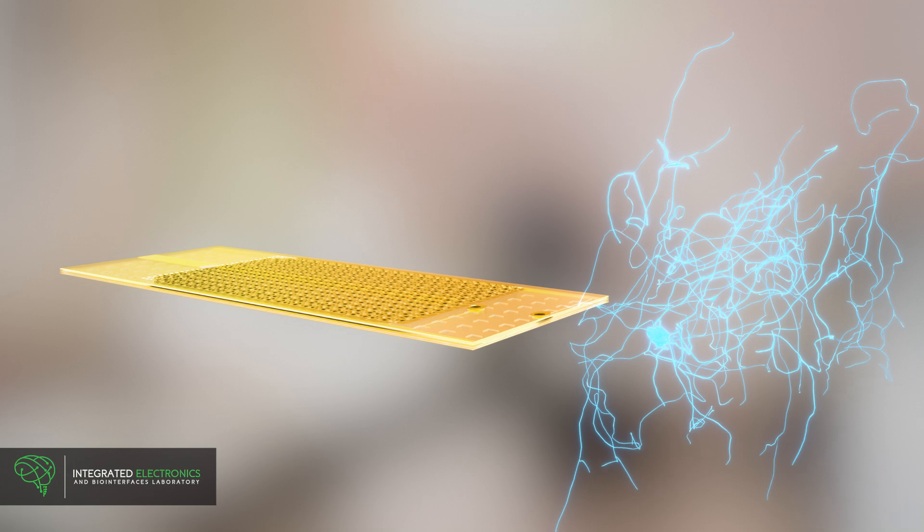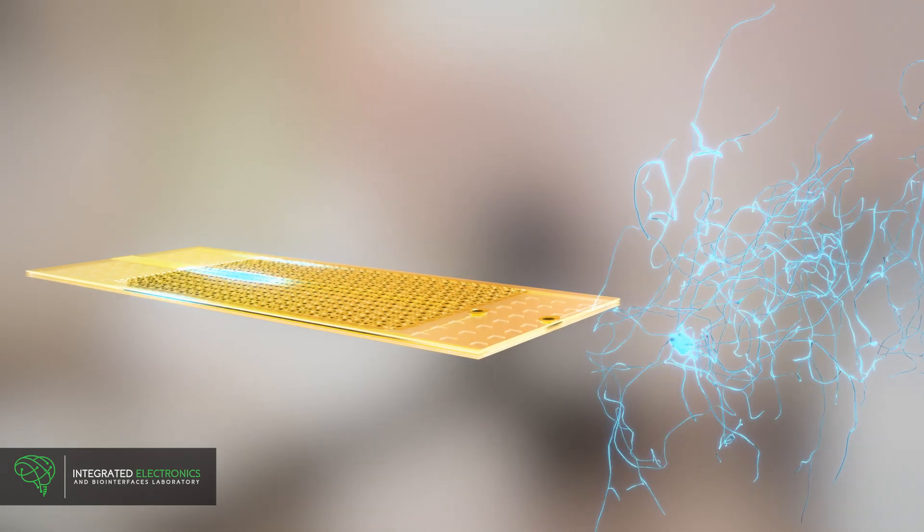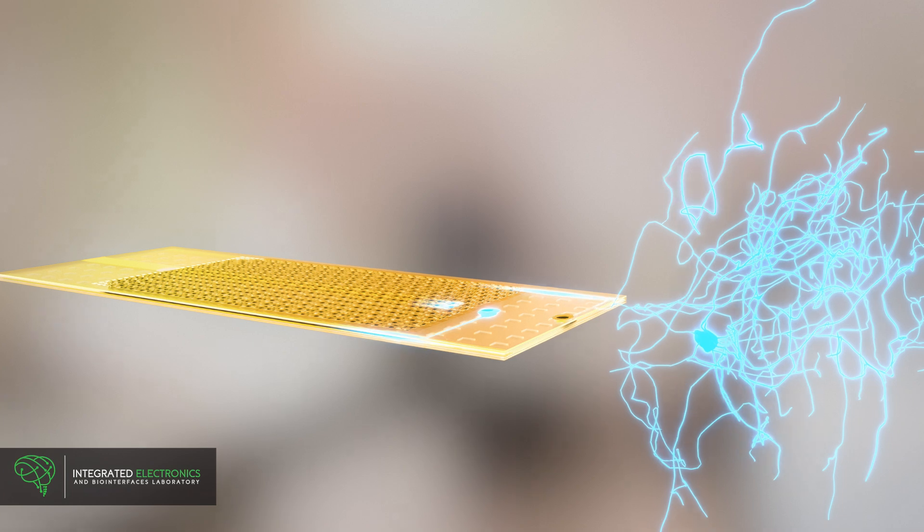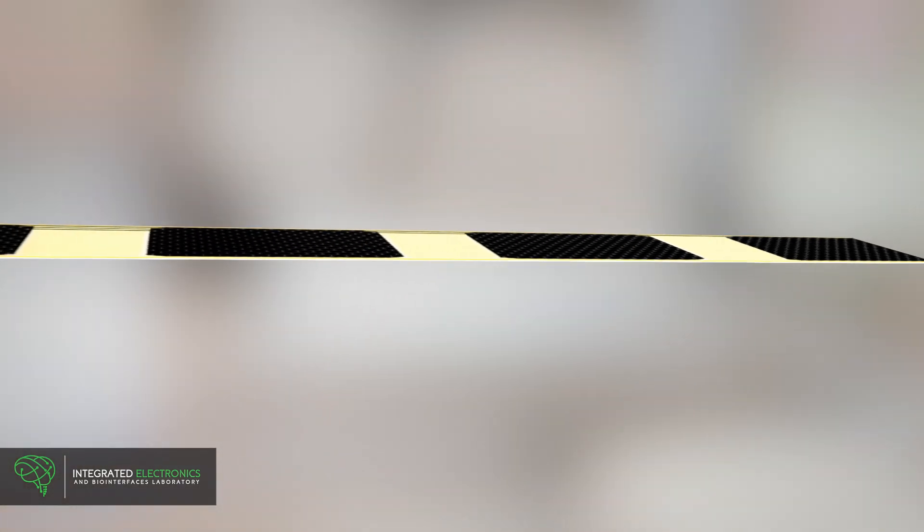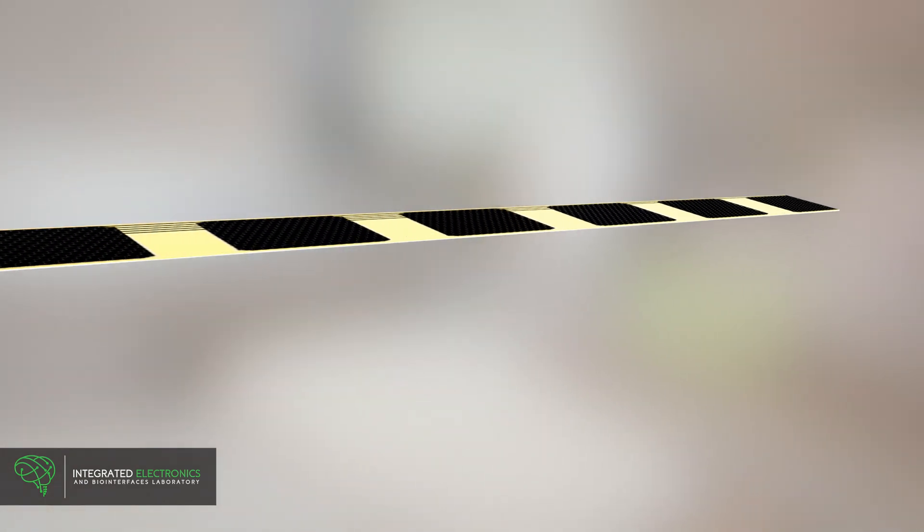The UCSD-Micro-SEEG can record neuronal signals with micro-contacts and stimulate neurons using macro-contacts at clinically acceptable levels. At over 10 centimeters long, it reaches deep brain structures.